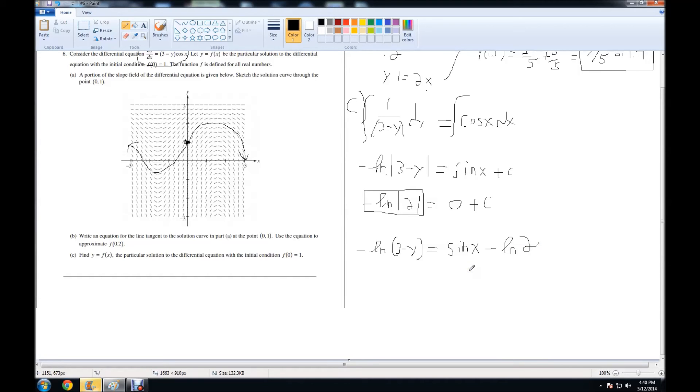Moving on, we got equals sin(x) minus the natural log of 2. From here, we need to solve for y. First thing I would do is multiply by a negative, so I can get rid of the negative sign, and we get natural log of (3-y) equals natural log of 2 minus sin(x).